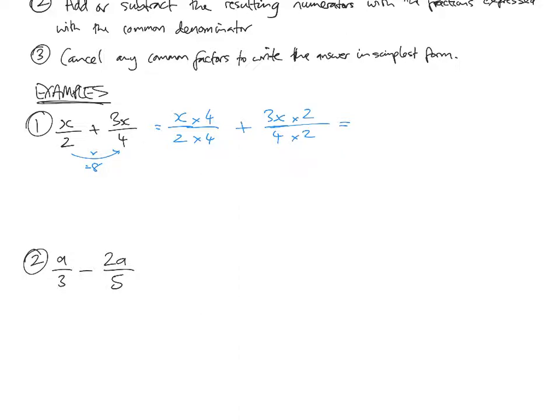Now, we get what's 4 times by x? It's 4x over 2 times by 4, 8. Plus, what's 3x times by 2? That's 6x over what's 4 times by 2, 8. Now, you can see we've pretty quickly got the original fractions, x on 2 and 3x on 4, expressed in terms of the denominator 8.